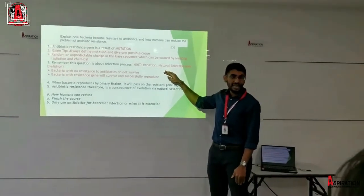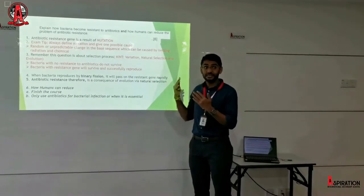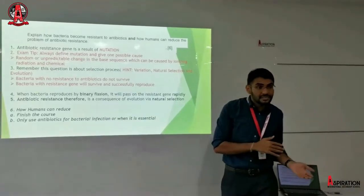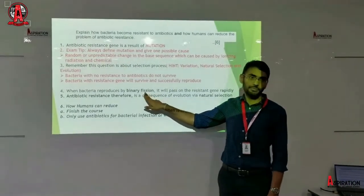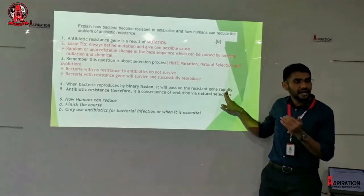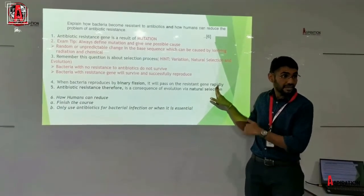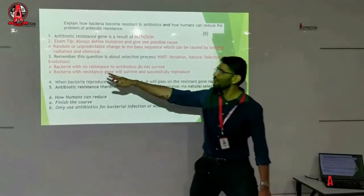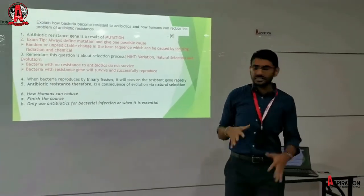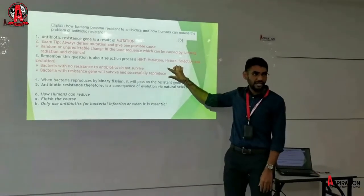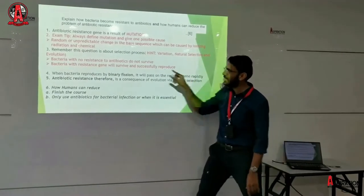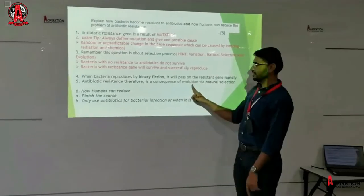You are going to tell the examiner that bacteria with resistance survive, and bacteria with no resistance die. The resistant ones will then undergo asexual reproduction and pass on the gene without any change to their future generations and offspring. This process will take place over many, many generations and form a colony of antibiotic resistance. You have beautifully described variation, natural selection, and evolution.